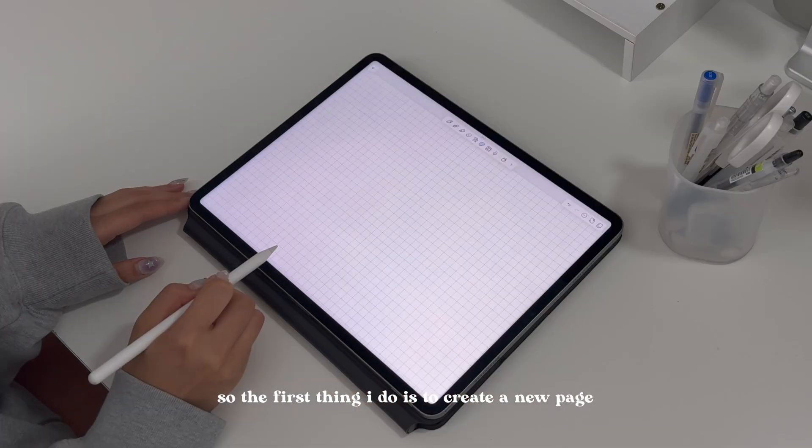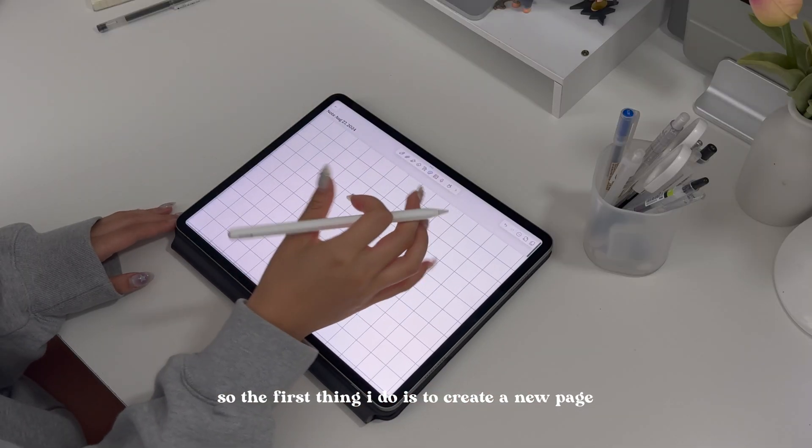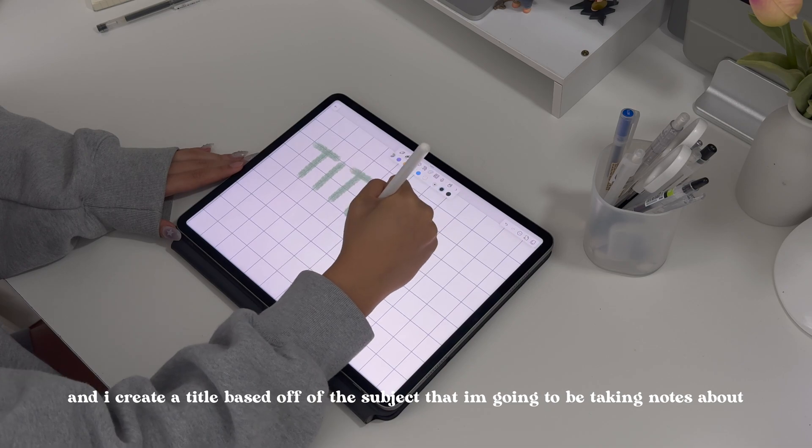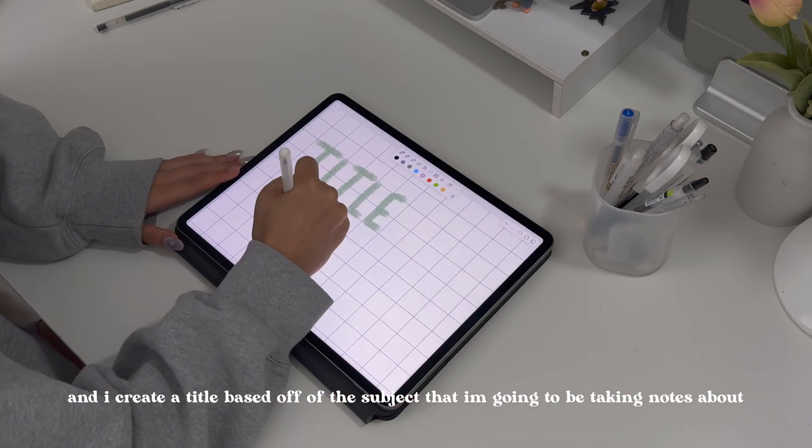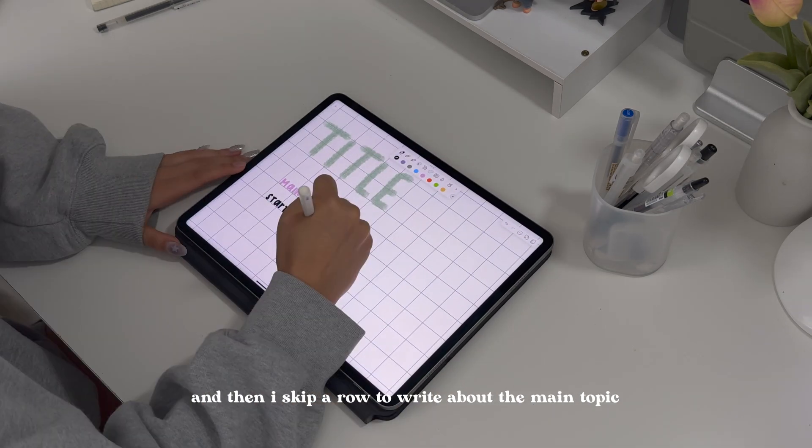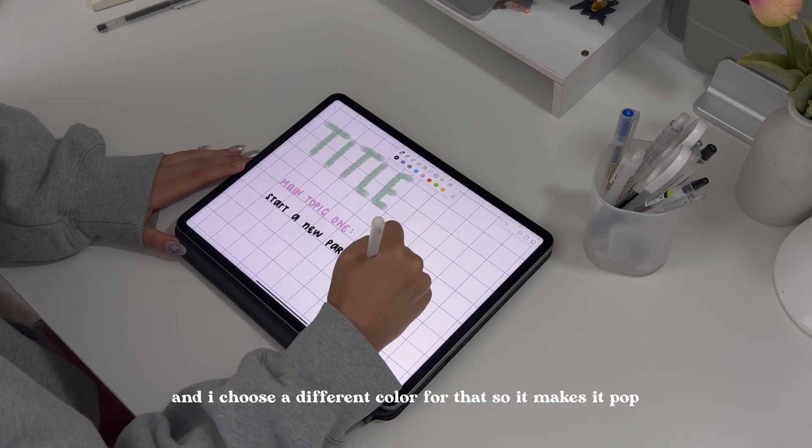So the first thing I do is create a new page and I like to use the graph template. I create a title based off of the subject that I'm going to be taking notes about, and then I skip a row to write about the main topic. I choose a different color for that so it makes it pop.